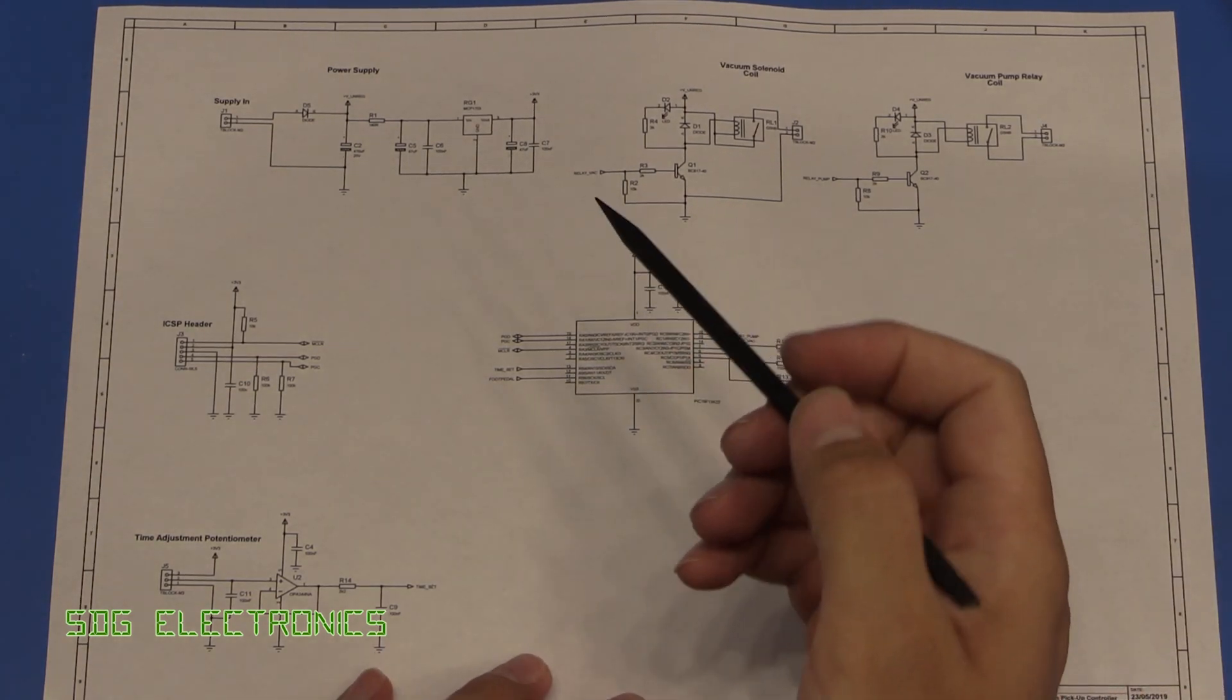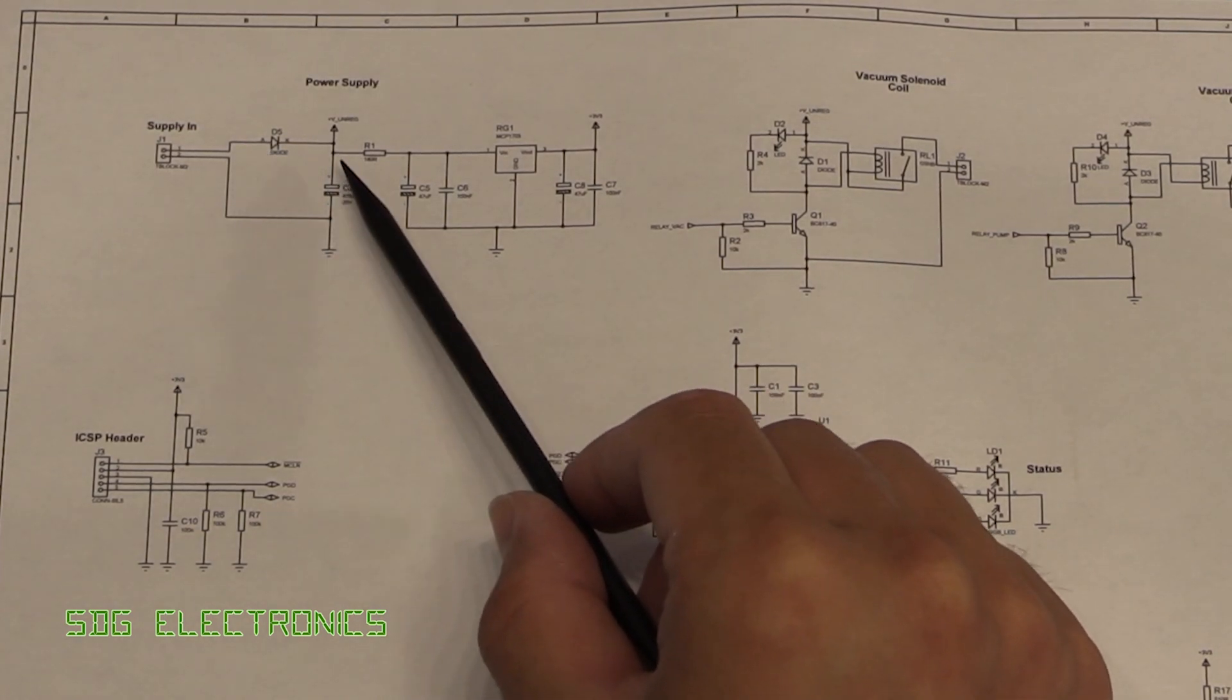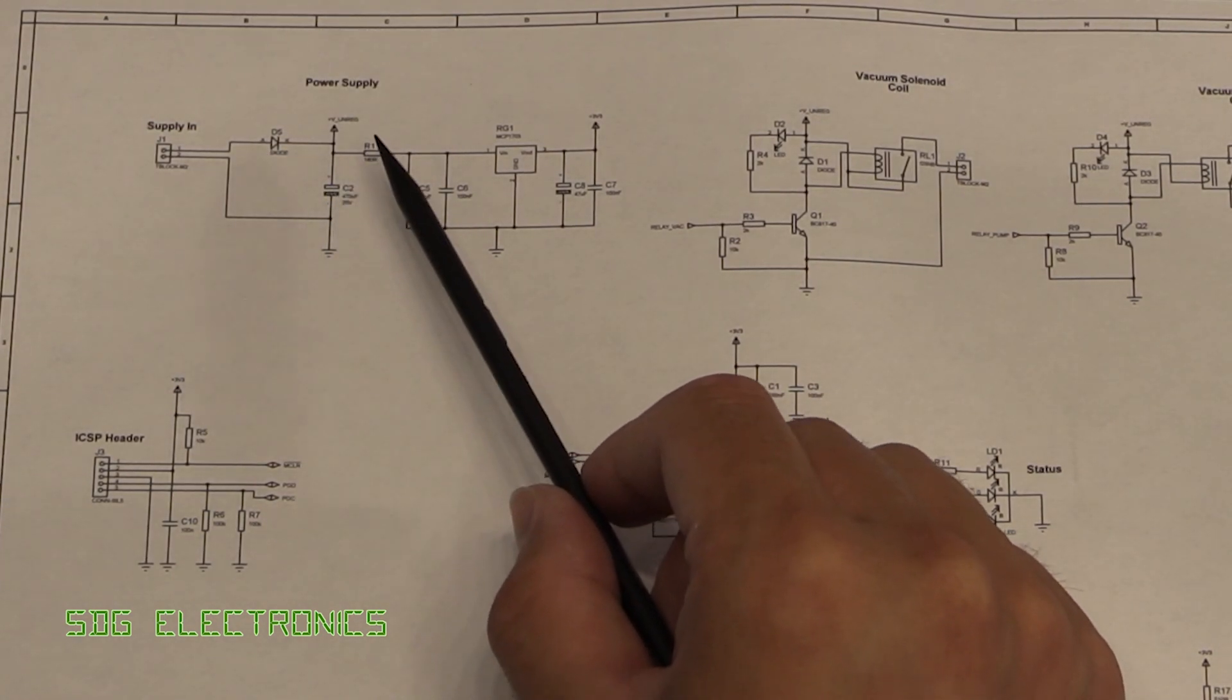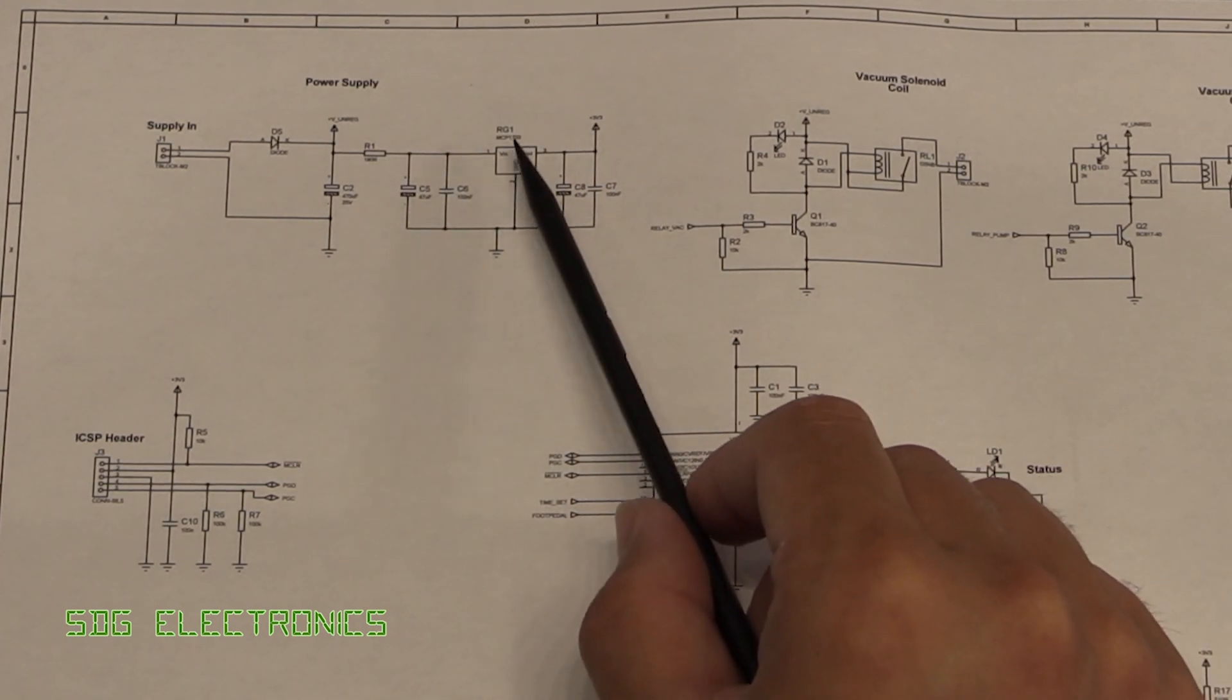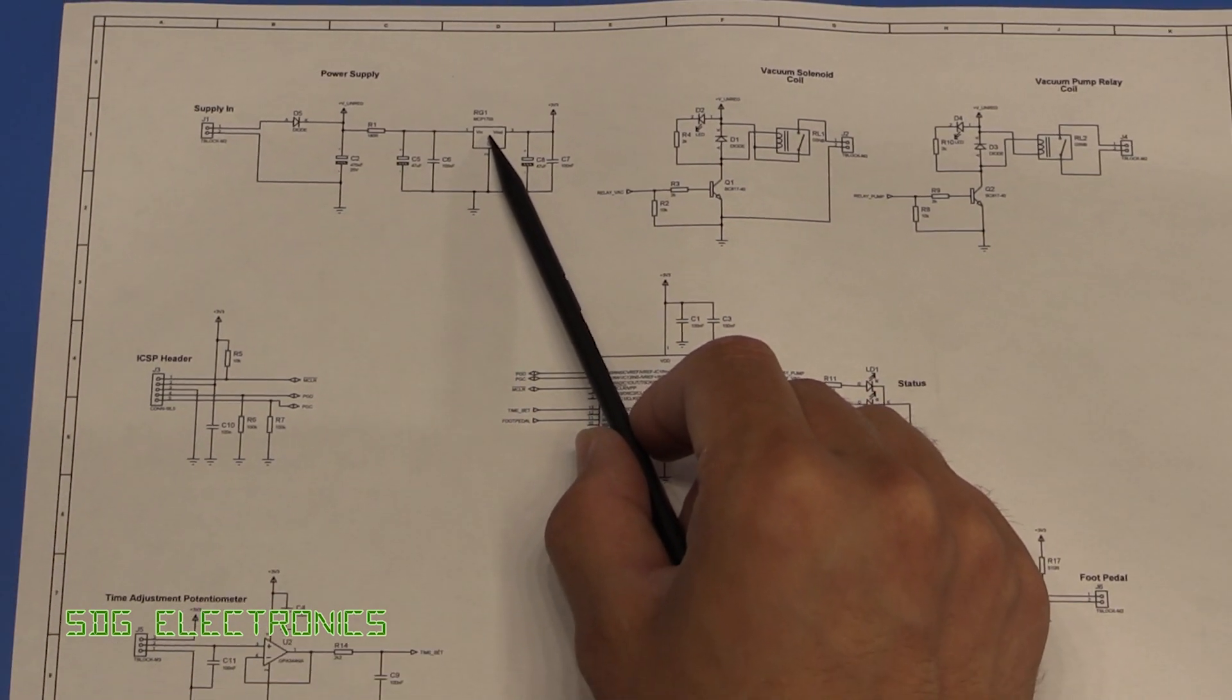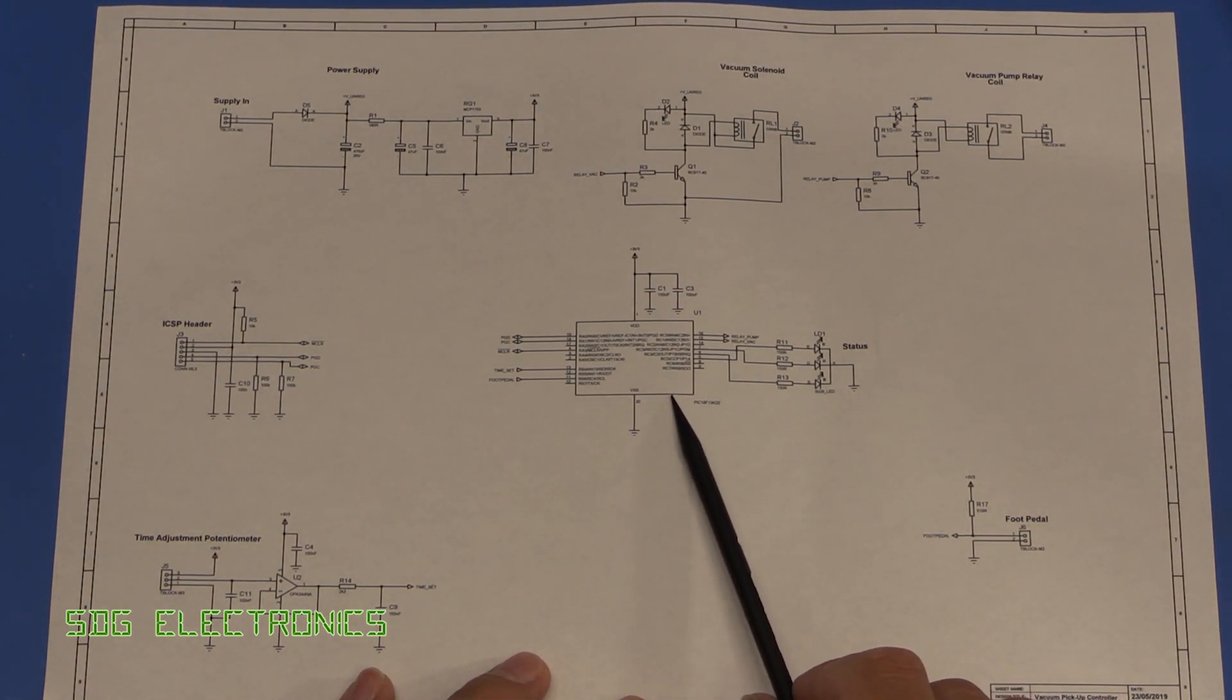But what we've got on the board here is basically the 24 volt supply in. We've got a reverse protection diode into a bulk capacitor. We've got a little resistor here just to drop some of the power so that not all of the heat is dissipated by the 3.3 volt regulator. And then the whole circuit is based around a PIC 18F 13K22.